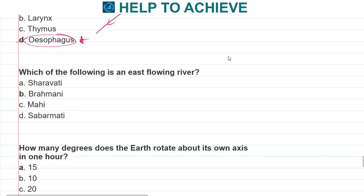Which of the following is an east-flowing river? Sharavati, Mahi, and Sabarmati are all west-flowing rivers. The Brahmani River, which is in Odisha, is an east-flowing river. The correct answer is Brahmani.